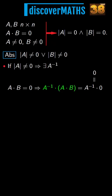First, we apply the associative property. And now we have the inverse of A times A, which is the identity matrix. This is times B. And the identity times B is B.